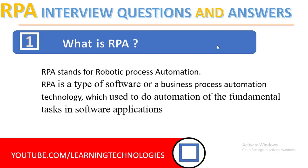First question: what is RPA? RPA stands for Robotic Process Automation. RPA is a type of software or a business process automation technology which is used to do automation of all fundamental tasks in software applications. In simple words, Robotic Process Automation allows organizations to automate tasks just like a human being was doing them across applications and systems. The main goal of RPA is to replace repetitive and boring critical tasks performed by humans.